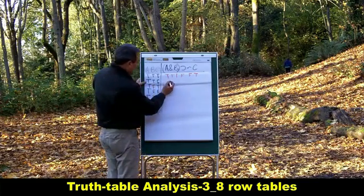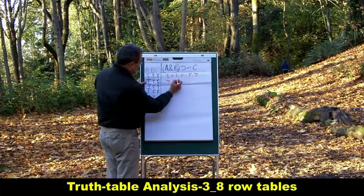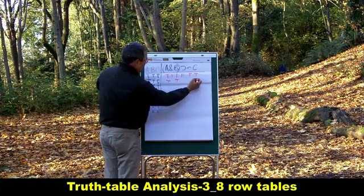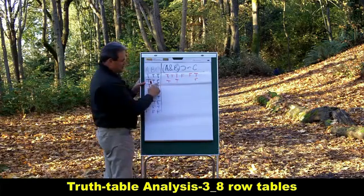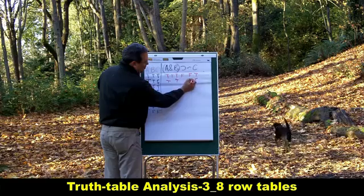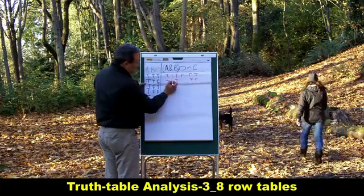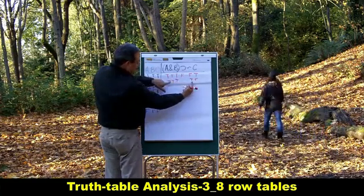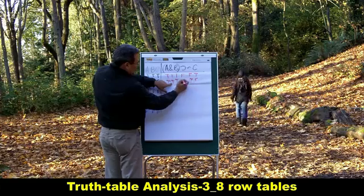So one way you make a conditional false is if you have a true antecedent and a false consequent. Row two, rather briskly here, A is true, B is true, and C is false. I'm just copying these guys here. Now I'm filling the rest of the blanks. Tilde here is gonna be true, the opposite of that. The ampersand is gonna be true, and then the conditional is gonna be true.